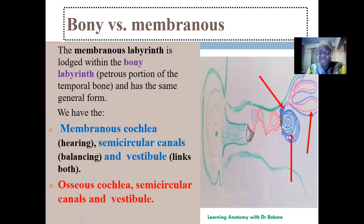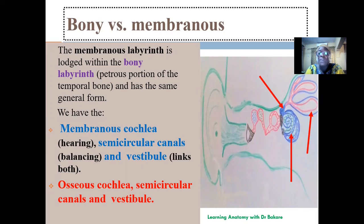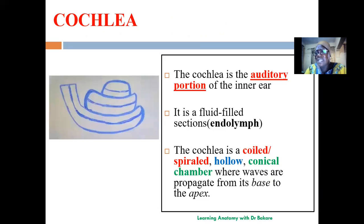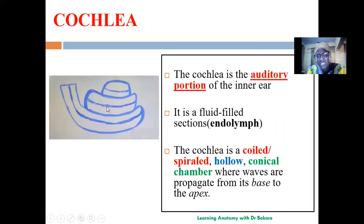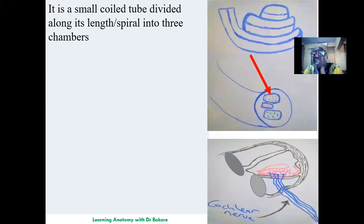Out of the three sub-structures in the inner ear, the cochlea is the main structure responsible for hearing. The semicircular canals and the vestibule are related to equilibrium and balance. The cochlea is the auditory portion of the inner ear; it is filled with fluid. The fluid within is the endolymph, while the perilymph separates the membranous cochlea from the osseous cochlea — reducing friction and protecting the membranous cochlea. The cochlea is structured like a long coiled or spiral structure, and waves are propagated through it accordingly.